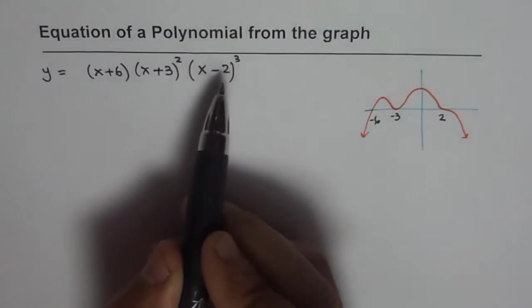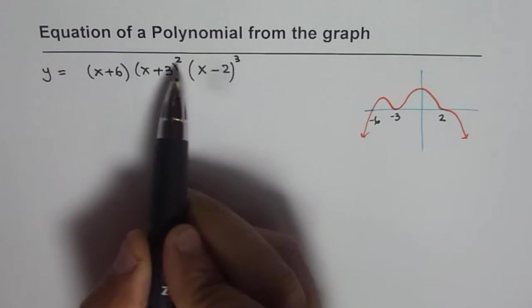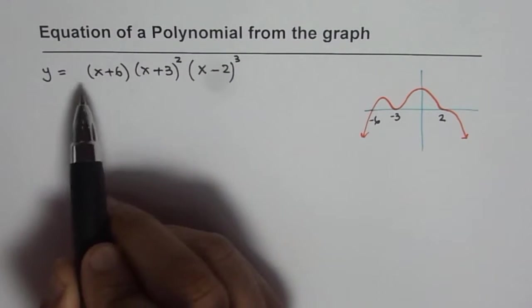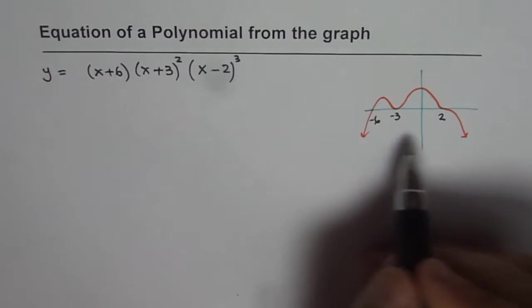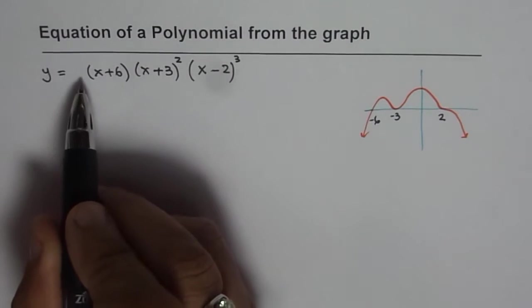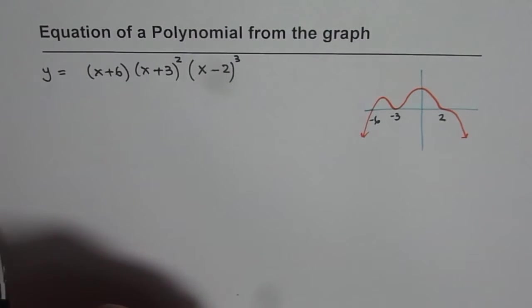Now you can see the degree of this polynomial is 3 plus 2, 5 and 1, 6 is an even degree polynomial. So both sides are on the same side and we know the leading coefficient here should be negative.